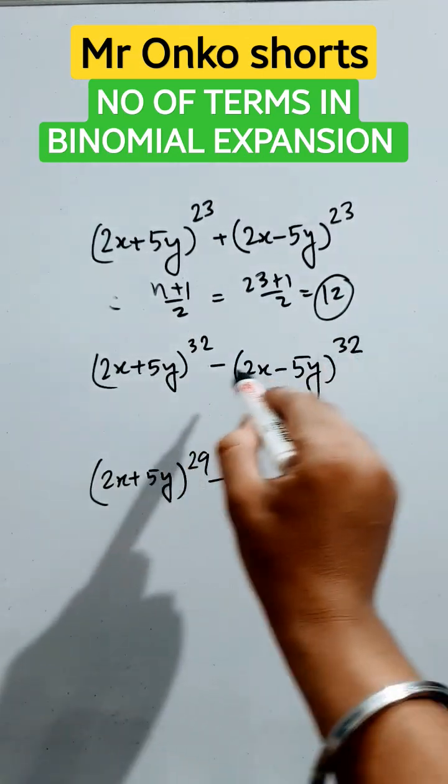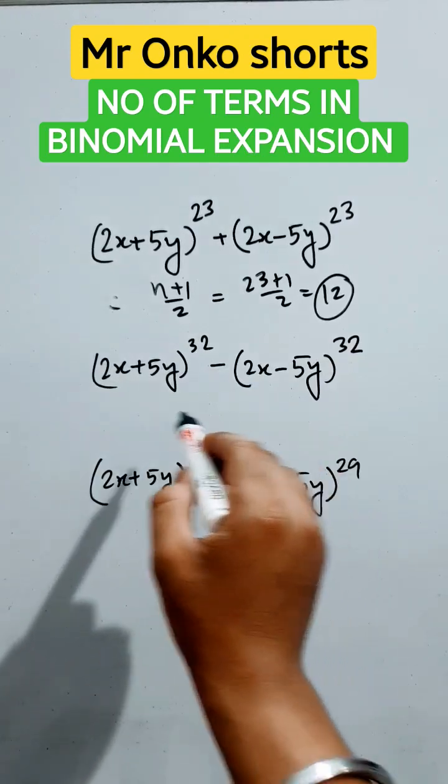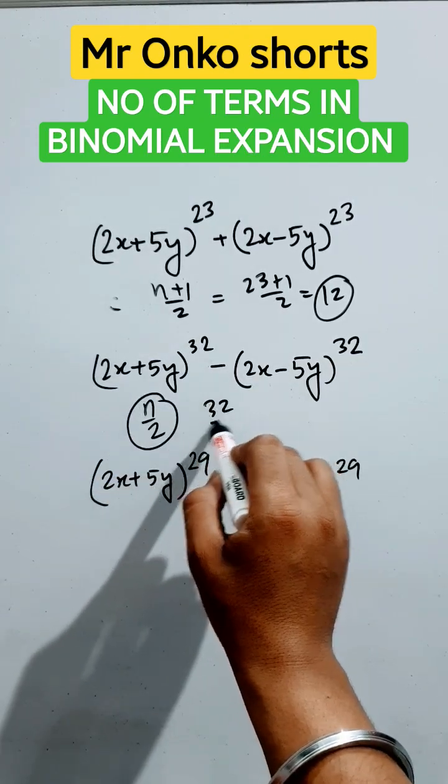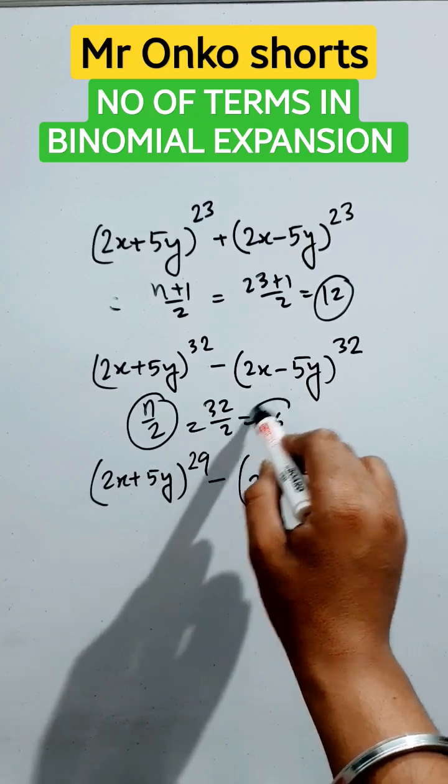Here, even powers and minus is in between them. So the number of terms will be n by 2. So it will be 32 by 2, 16 terms are there.